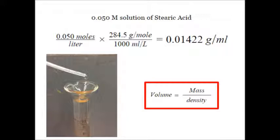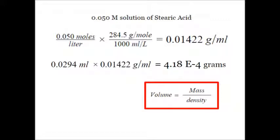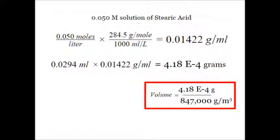Forming a puddle. So how big is the drop? I took my pipette and found that it took 34 drops to make a milliliter, meaning each drop has a volume of 0.0294 milliliters. Now we know the mass of stearic acid inside that drop: about 4.2 × 10⁻⁴ grams. Now we know the mass and the density, so we can find the volume of stearic acid.